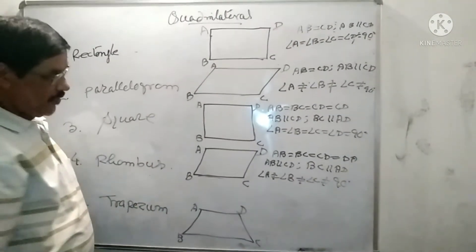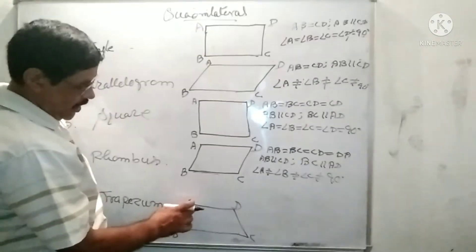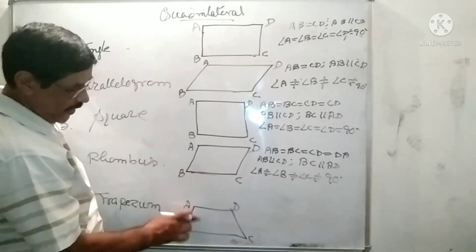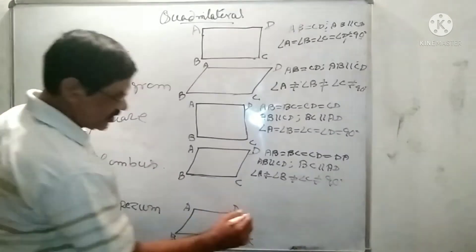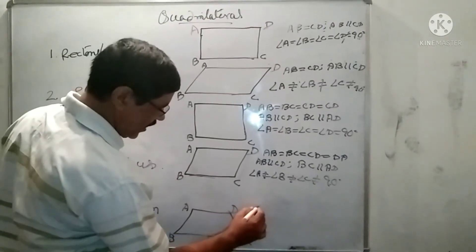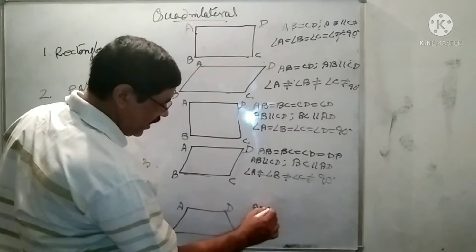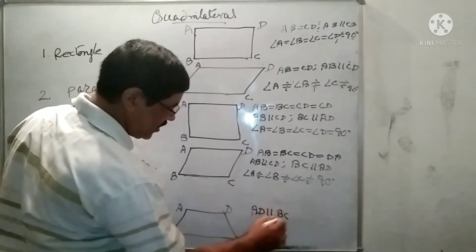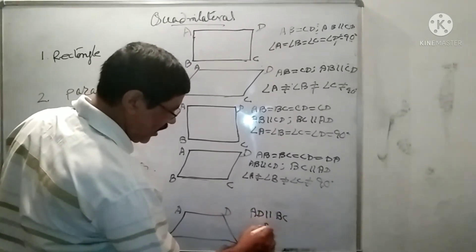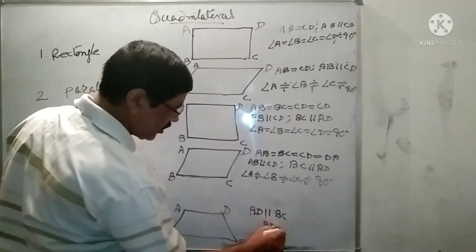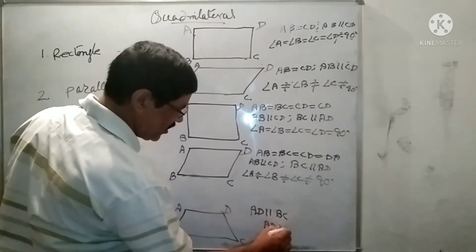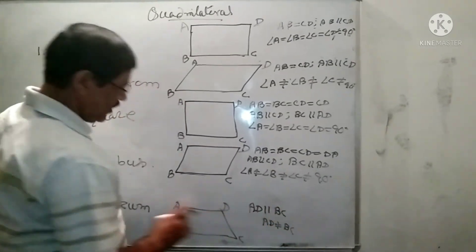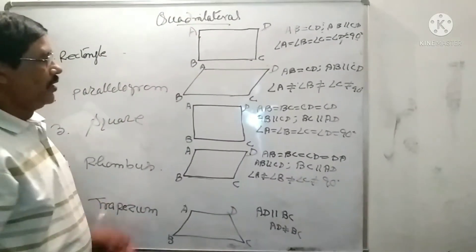And in a trapezium, a quadrilateral whose one pair of opposite sides are parallel but not equal — AD is parallel to BC but AD is not equal to BC — is known as the trapezium.